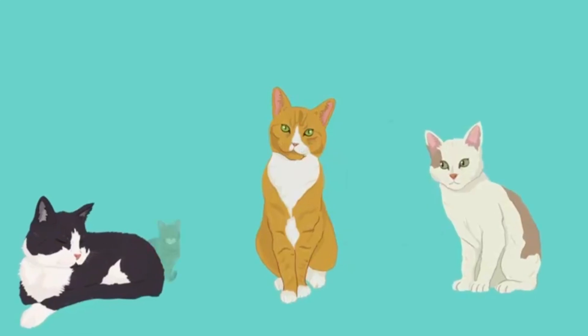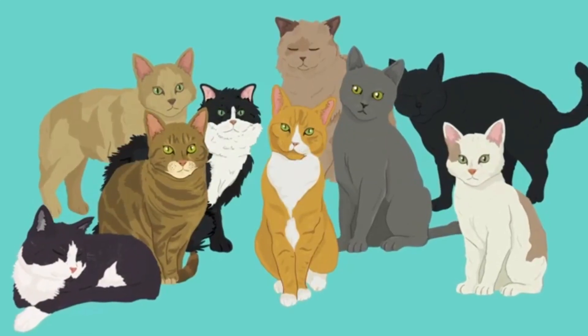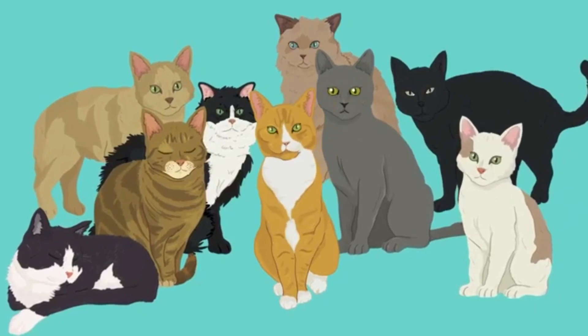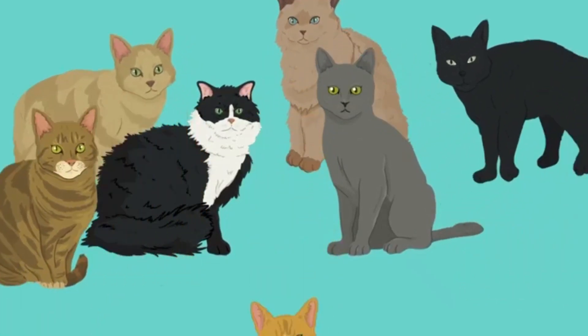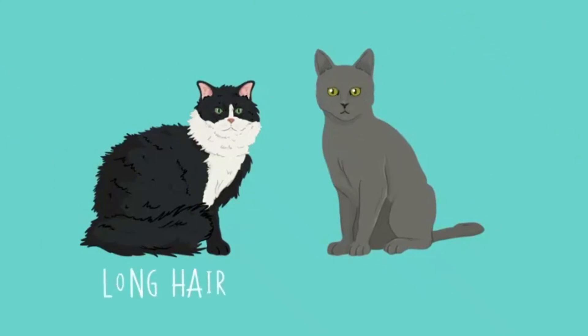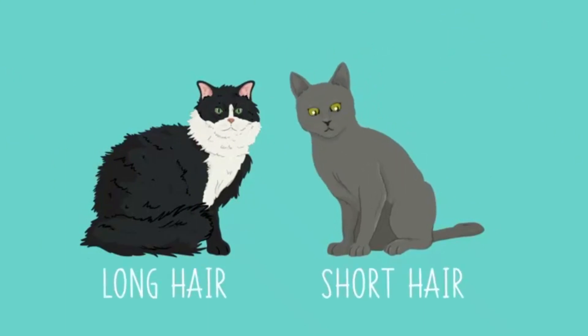Cats come in many colors and patterns. These are determined by lots of different genes interacting. But some characteristics are inherited through just a single gene, including long or short hair in cats.